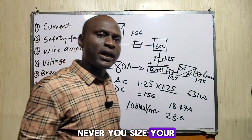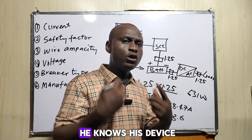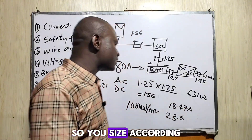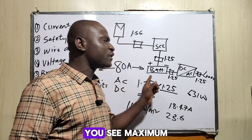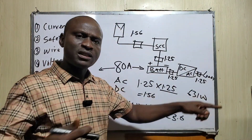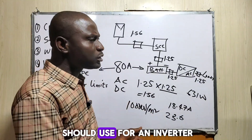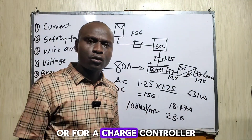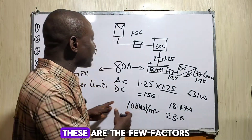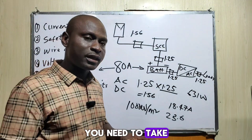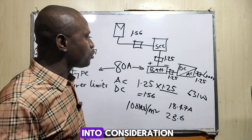Then there are manufacturer limits. Never size your breaker above the manufacturer's limits — the manufacturer knows his device. If you look at the back of your solar panel, you will see the maximum series fuse rating — the maximum breaker size you should use. Always stay within the manufacturer's recommendations. These are the key factors you need to take into consideration.